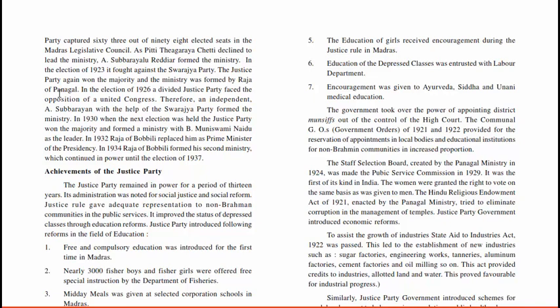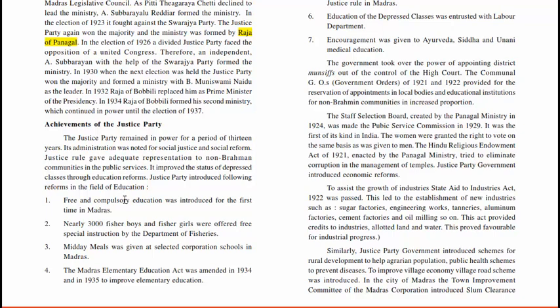In the election of 1926, a divided Justice Party faced the opposition of a united Congress, and therefore an independent, A. Subarayan, with the help of the Swaraj Party, formed the Ministry in 1930. When the next election was held, the Justice Party won the majority and formed the Ministry with B. Muni Swamy Naidu as the leader. In 1936, the Raja of Bobili replaced him as Prime Minister of the Presidency. In 1934, the Raja of Bobili formed his second ministry, which continued in power until the election of 1937.